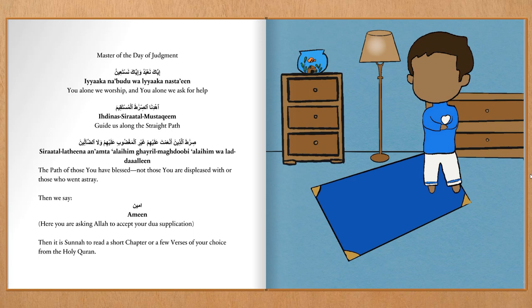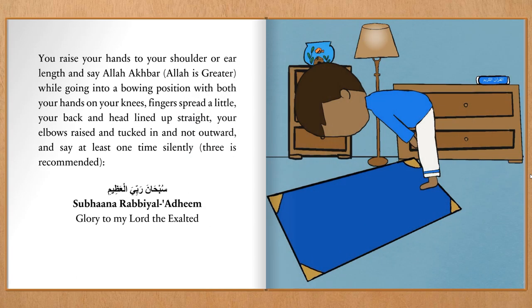Then it is sunnah to read a short chapter or a few verses of your choice from the Holy Quran. You raise your hands to your shoulder or ear length and say Allahu Akbar — Allah is greater — while going into a bowing position, with both your hands on your knees, fingers spread a little, your back and head lined up straight, your elbows raised and tucked in, and not outward. Say at least one time silently — three is recommended.